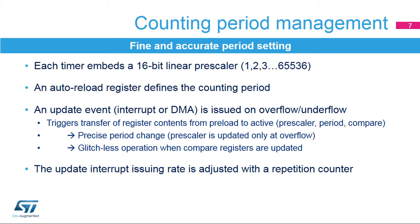Each timer embeds a linear clock prescaler, which allows you to divide the clock by any integer between 1 and 65536, precisely adjusting the counting pace. For instance, a division by 64 yields a 1 MHz counting rate when the APB clock is 64 MHz. The auto-reload register defines the counting period. In down-counting mode, the counter is reloaded with the period value when it underflows; in up-counting mode, it resets when it exceeds the auto-reload value. An update event is issued on overflow or underflow, triggering an interrupt or DMA request useful for real-time control.